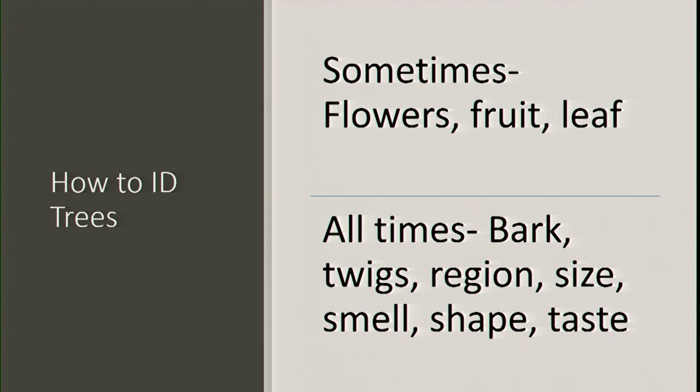There's a tree called toothache tree, also called Hercules Club. If it has no leaves on it, you can take off a piece of the bark and it'll numb your mouth. Native Americans used to use it for toothaches.